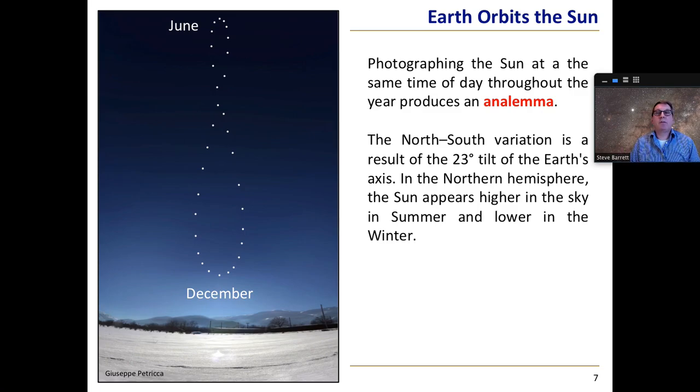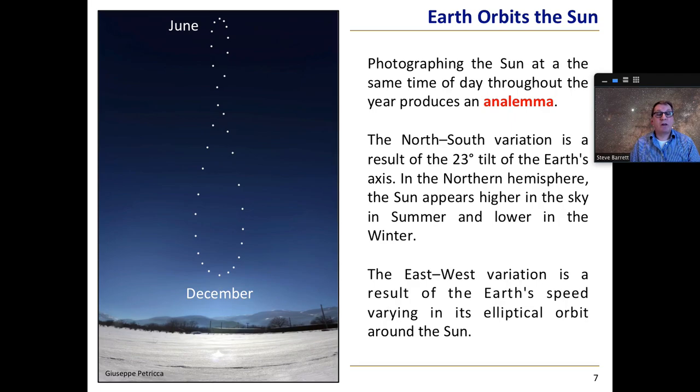For instance, if we take the picture at 12 o'clock, sometimes the Sun hasn't quite reached the meridian yet, and sometimes the Sun has already passed the meridian. And that's because of the elliptical orbit around the Sun that produces the east-west variation and the combination of those to produce this figure of eight.